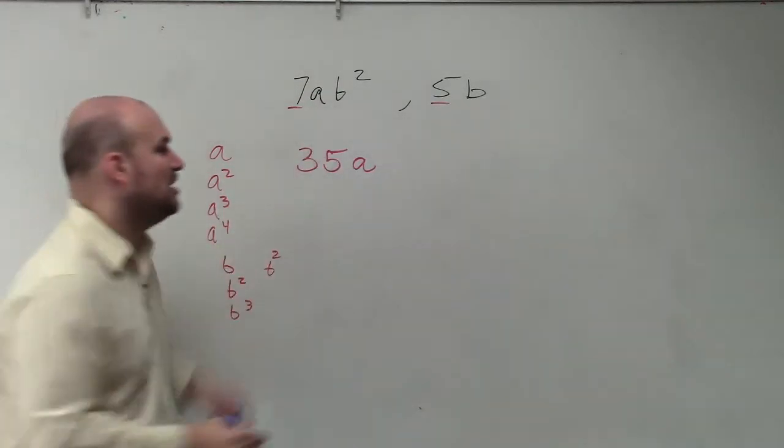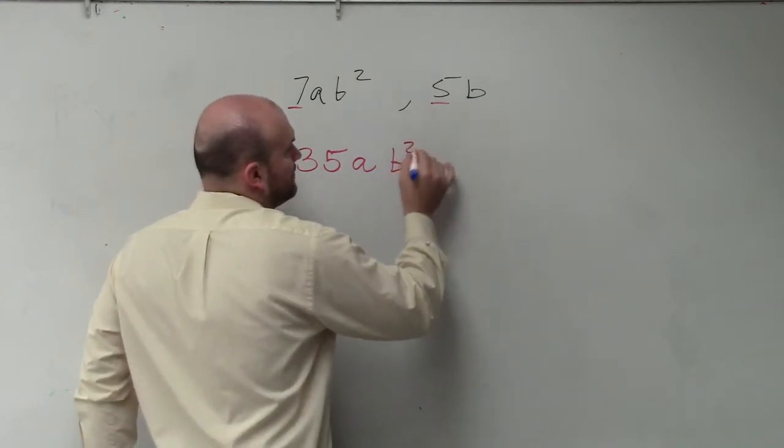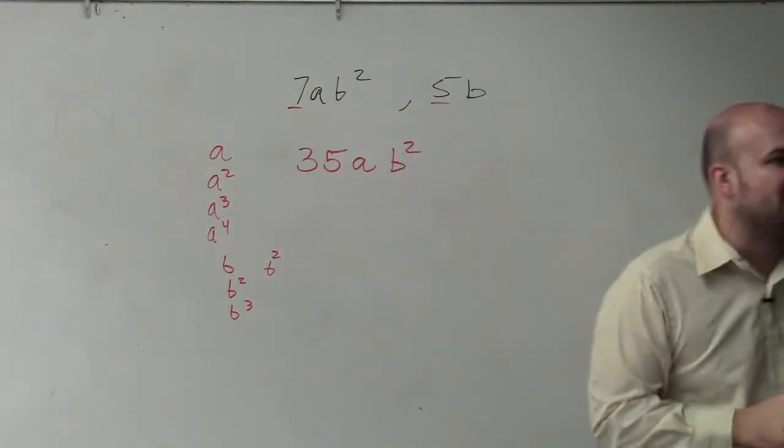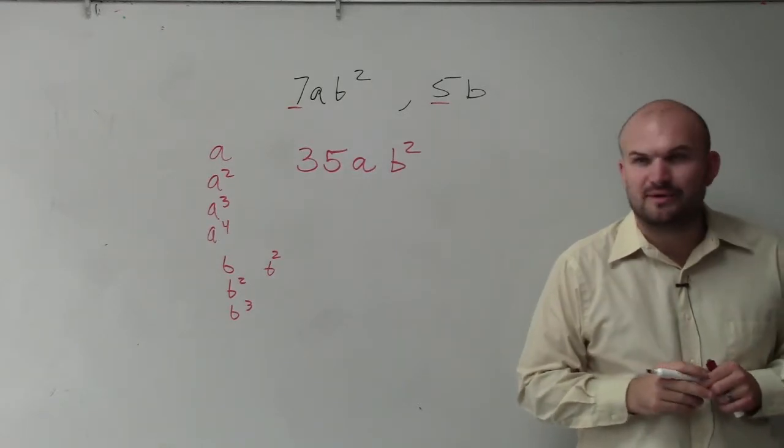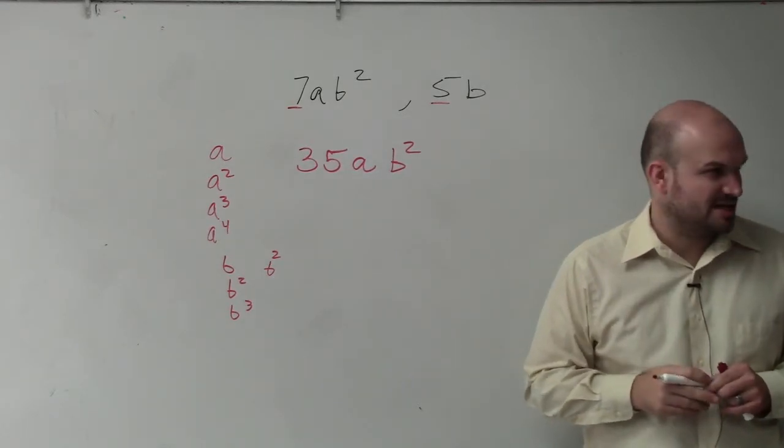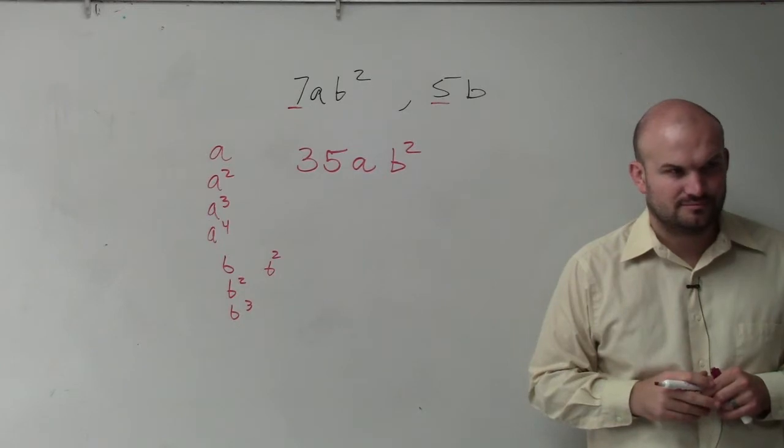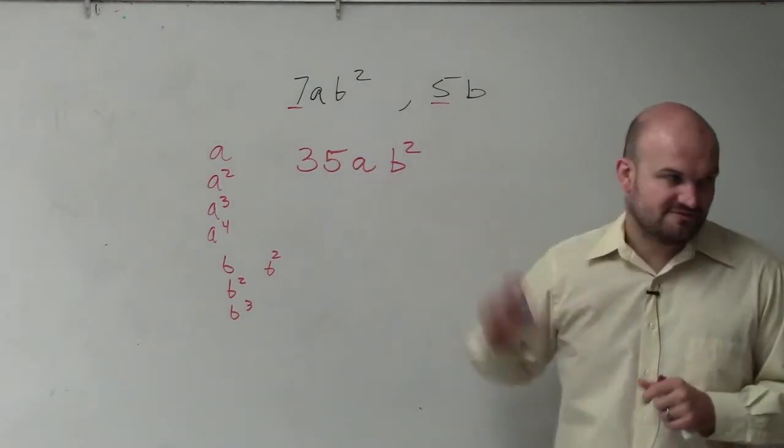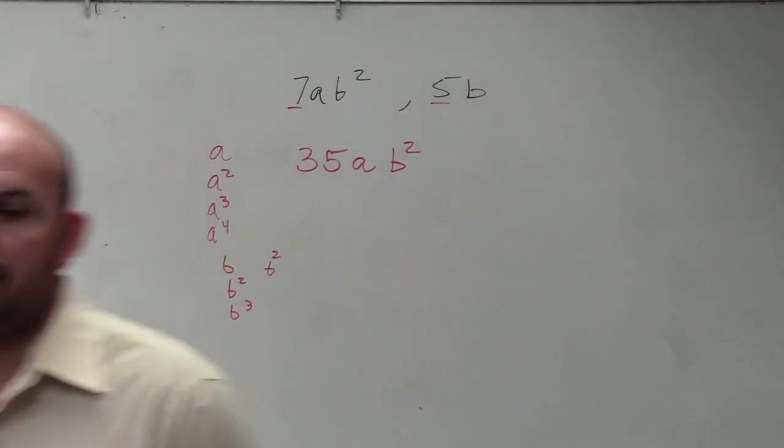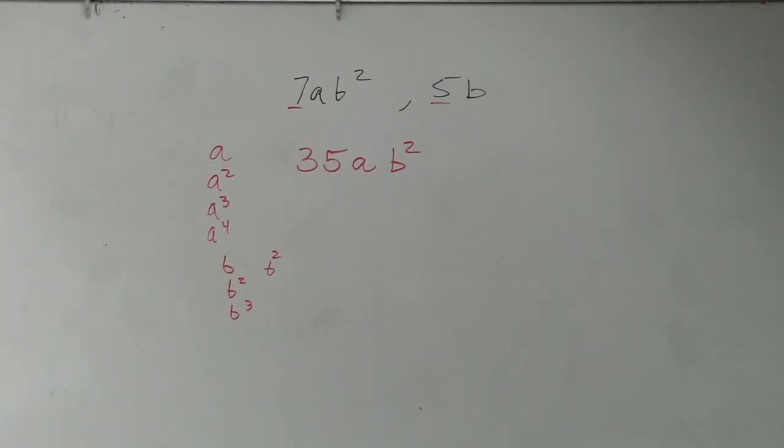So therefore, the smallest multiple that both of these terms can divide into is 35ab squared. Does anybody understand that? Any questions? So this is just finding the least common multiple. It's just a little practice.